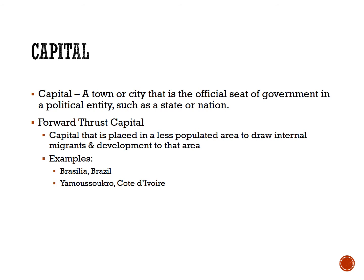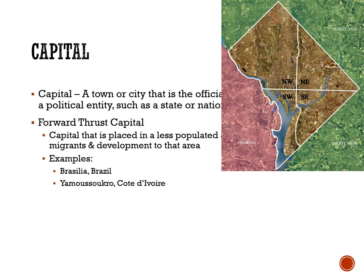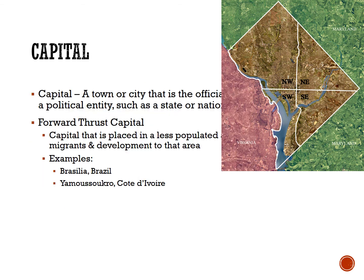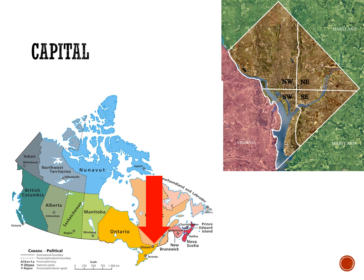In many cases, the capital is located in a territory completely independent of any other subunit. We see this with Washington DC — where DC stands for District of Columbia — separate from the surrounding states of Maryland and Virginia, as well as the Australian Capital Territory in Australia. Washington DC is also an example of a compromise capital, situated between the North and the South that had different interests. We can see the same thing in Ottawa, the capital of Canada, which is situated between the French-speaking territory of Quebec and the rest of the English-speaking country.